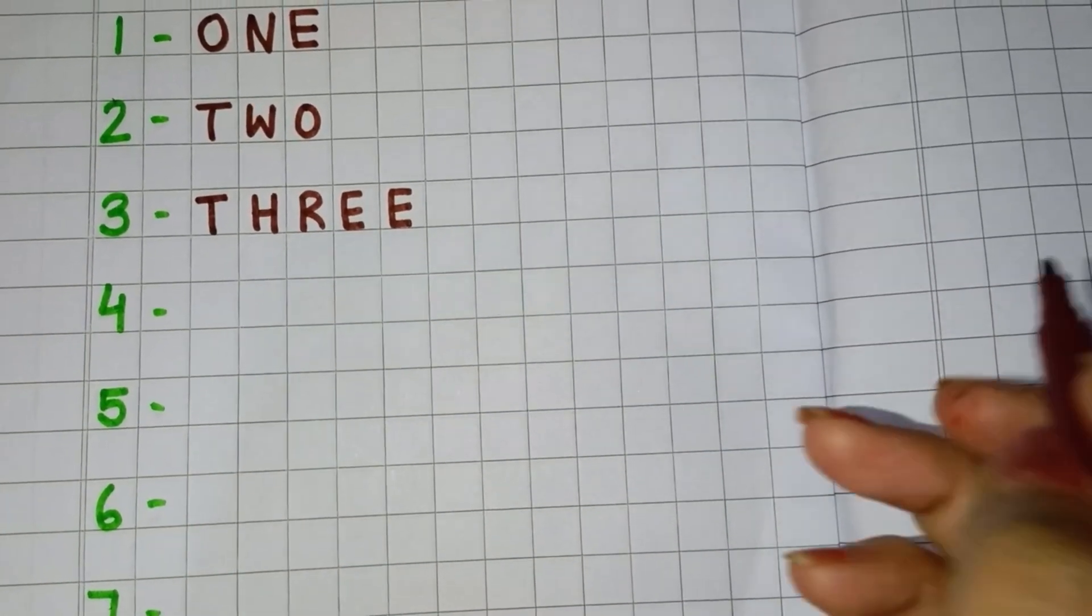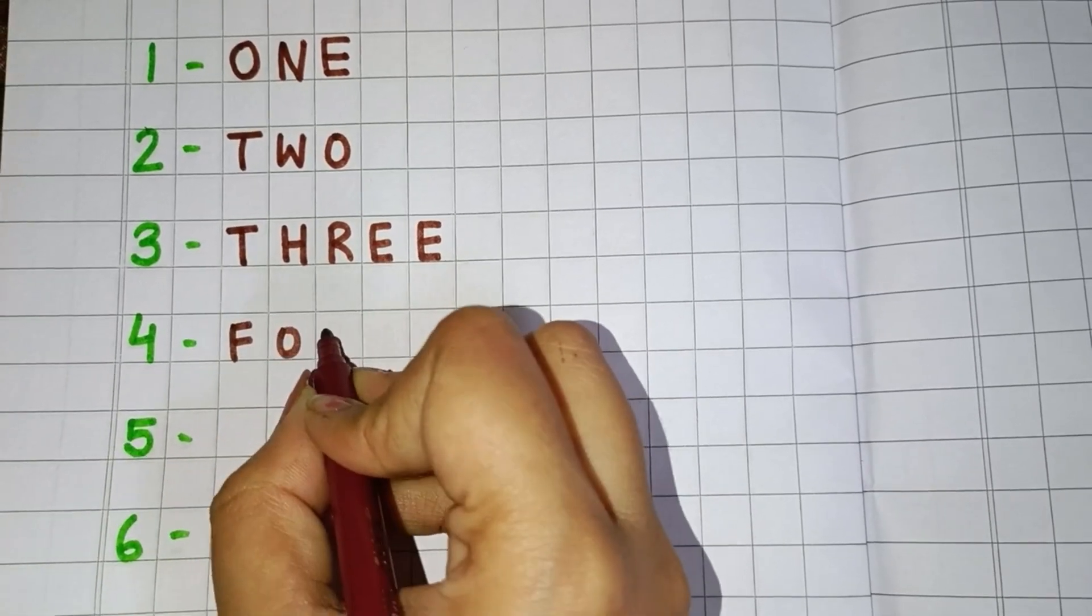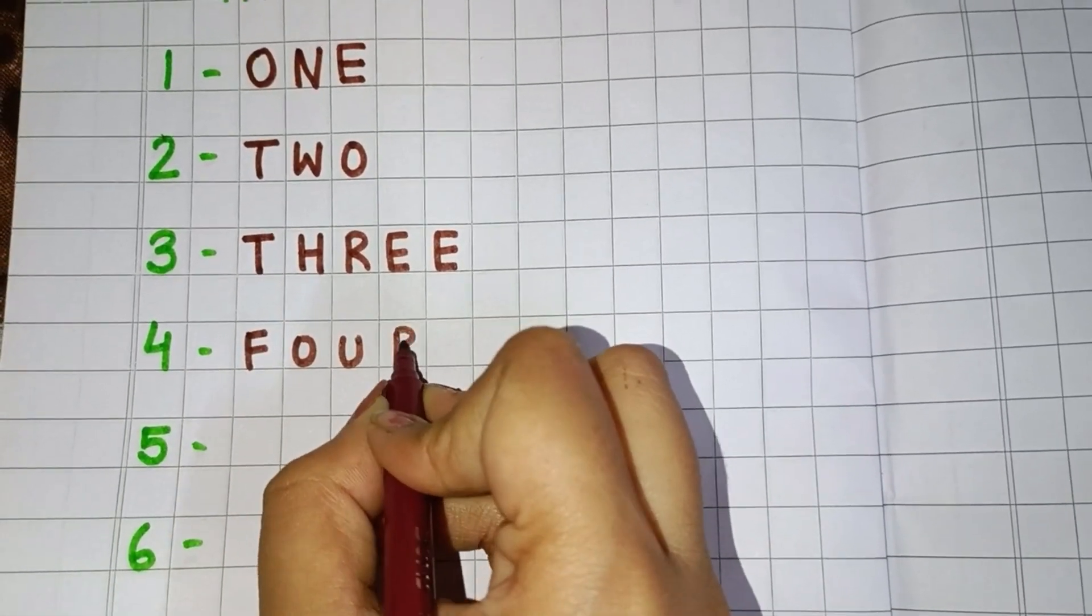The next is 4. So you will write F, O, U, R. Four.